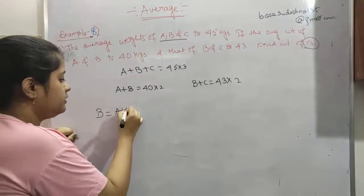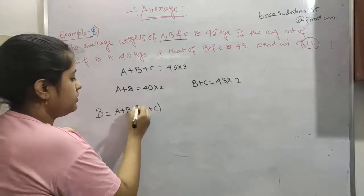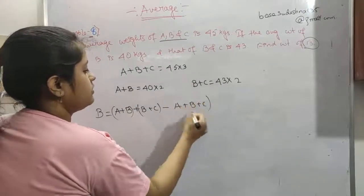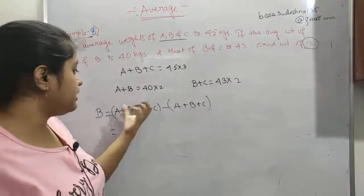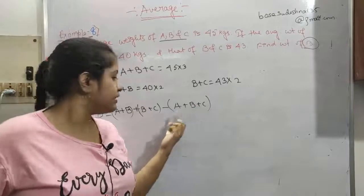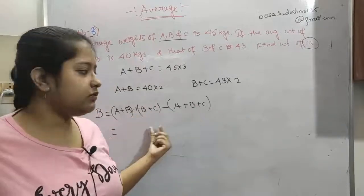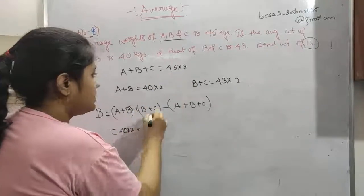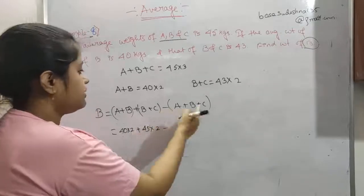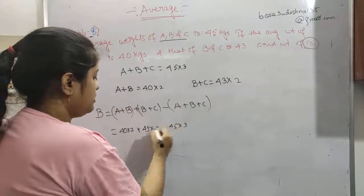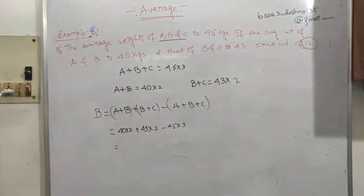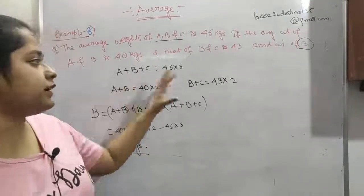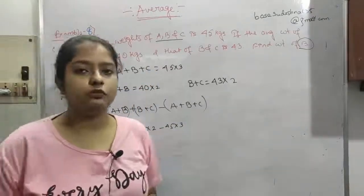We can write B = (A+B) + (B+C) − (A+B+C). A and A cancel, C and C cancel, B+B−B = B. So B = 40×2 + 43×2 − 45×3. The weight of B comes down to 31 kg. I hope you have practiced with me — 31 kg is the answer.